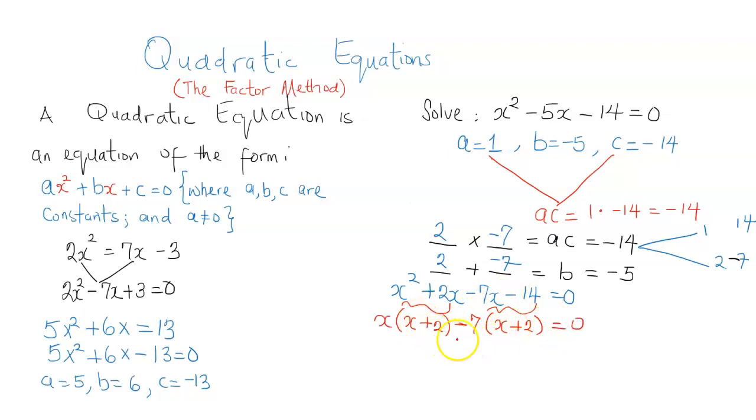So we see here that we've got the same item in the brackets. So I'm going to combine what's outside, x and negative 7, and just pick one of the items in the parentheses.